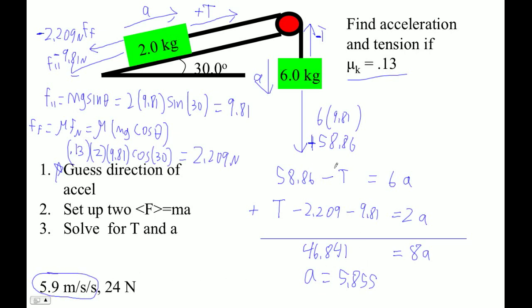And now let's figure out the tension here. Which one? This is the simplest one to find the tension with. So we'll use this guy here. 58.86 minus T equals 6 times 5.855.